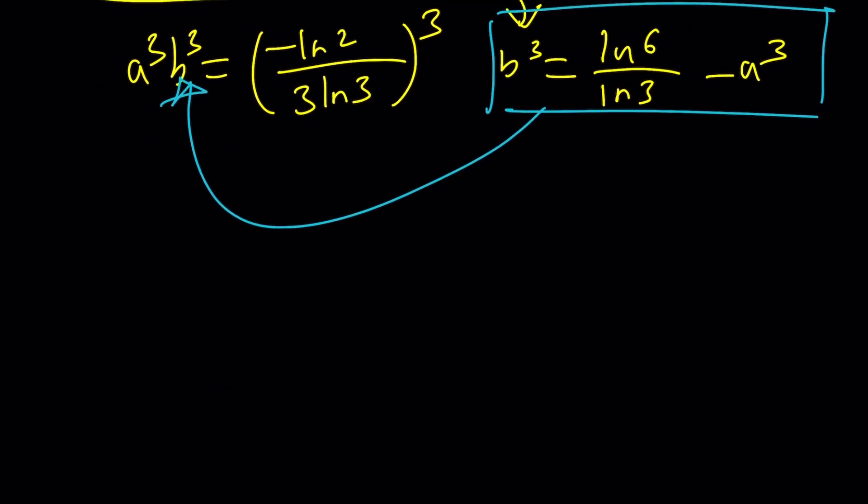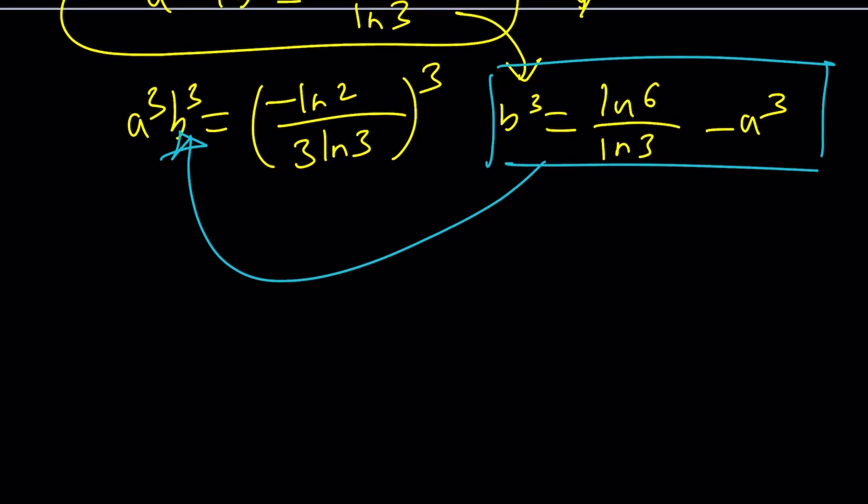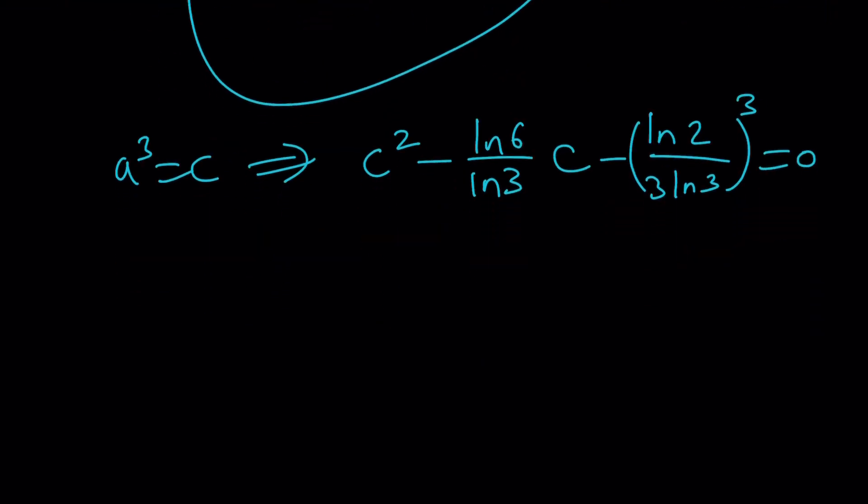So let's go ahead and cube both sides here. That's going to give us a cubed b cubed equals negative ln 2 over 3 ln 3 cubed. I'm just going to write it as something cubed for now. And then from the other equation, I can isolate b cubed and write it as ln 6 over ln 3 minus a cubed. Now you can go ahead and take this and substitute here. And guess what? That's going to give you a quadratic equation in a cubed.